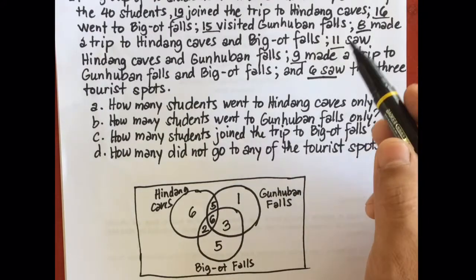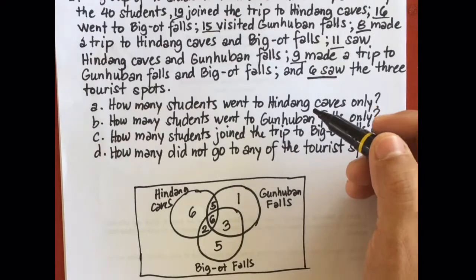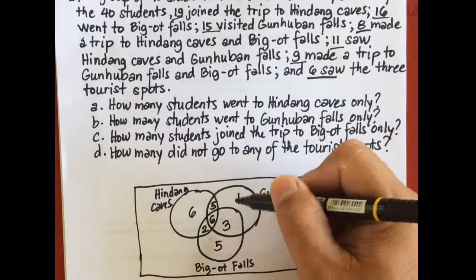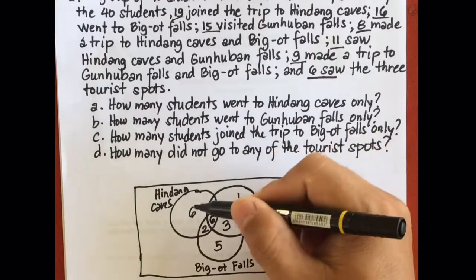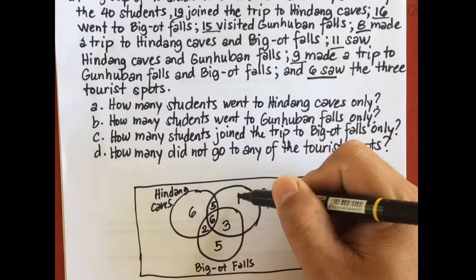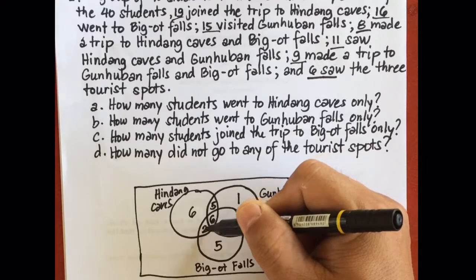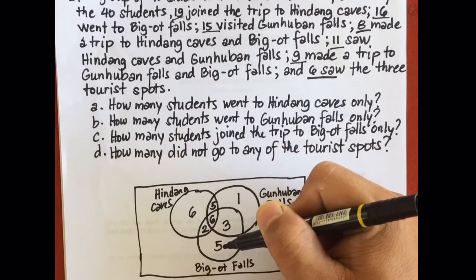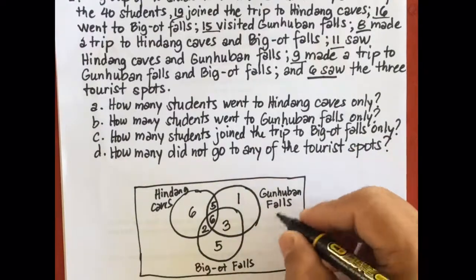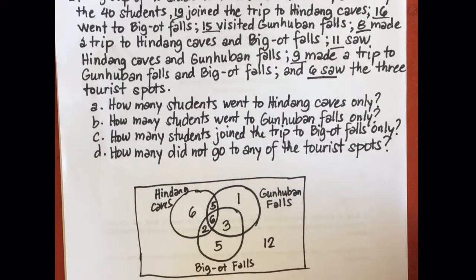To get the number of students who did not go to any of the tourist spots, we subtract 40 by the sum of all values inside the circles. So 6 plus 5 is 11, plus 1 is 12, plus 8 is 20, plus 3 is 23, plus 5 is 28. So 40 minus 28 equals 12 students who did not go to any of the tourist spots.